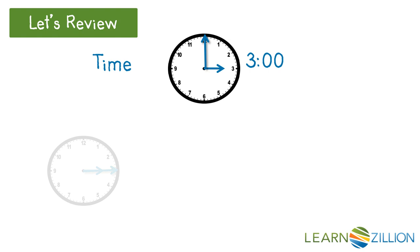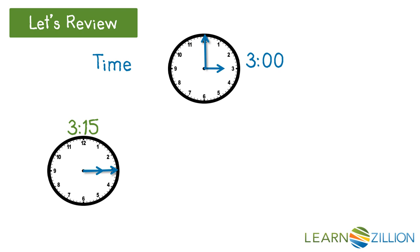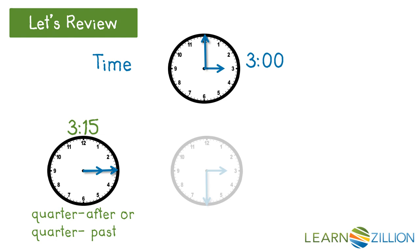What time does this clock read? That's right — 3:15. Since the minute hand is one-fourth of the way around the clock, or one-quarter of the way, we can also say it's quarter after three or quarter past three.